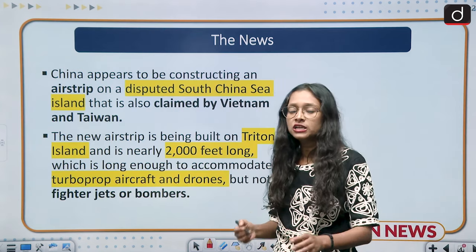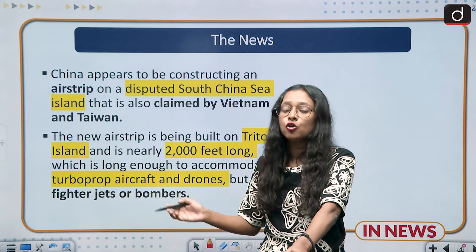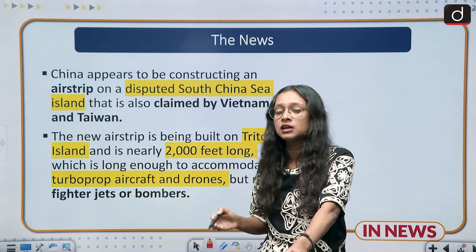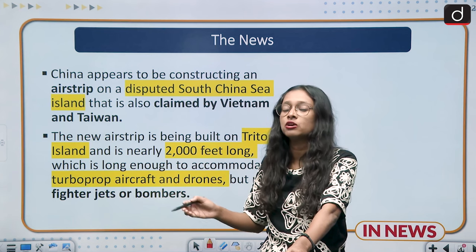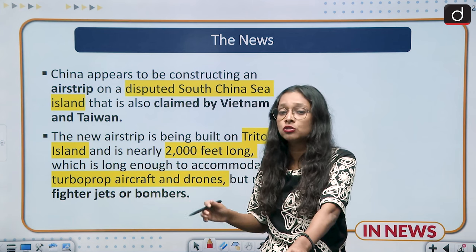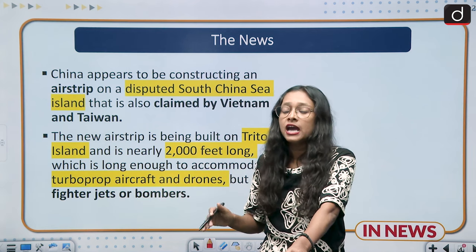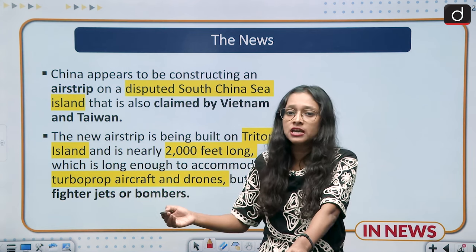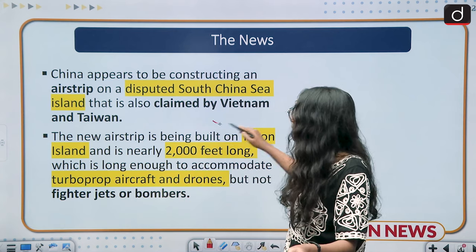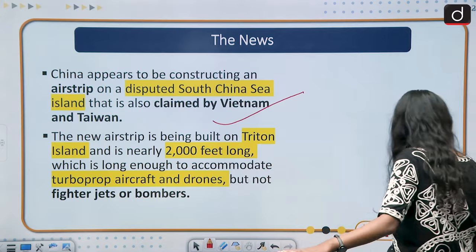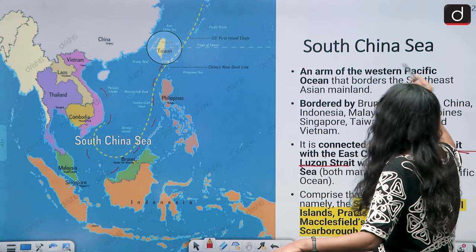What happened in the news is that an airstrip is being built by China over Triton Island. Taiwan and Vietnam are claiming over Triton Island, saying this area cannot belong just to China. Because of that, this new controversy has emerged over the South China Sea.